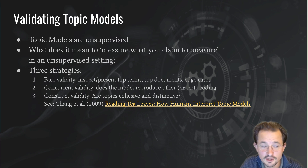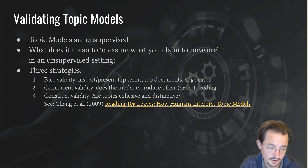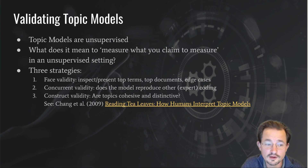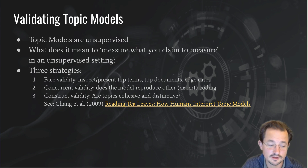What is interesting — one of their key results — is that the perplexity-based models, the ones that score really well on mathematical goodness of fit, are often not the ones that score well on human interpretation of cohesiveness and distinctiveness. That's an important takeaway: the perplexity graph isn't always the best indicator of what is a good topic model.